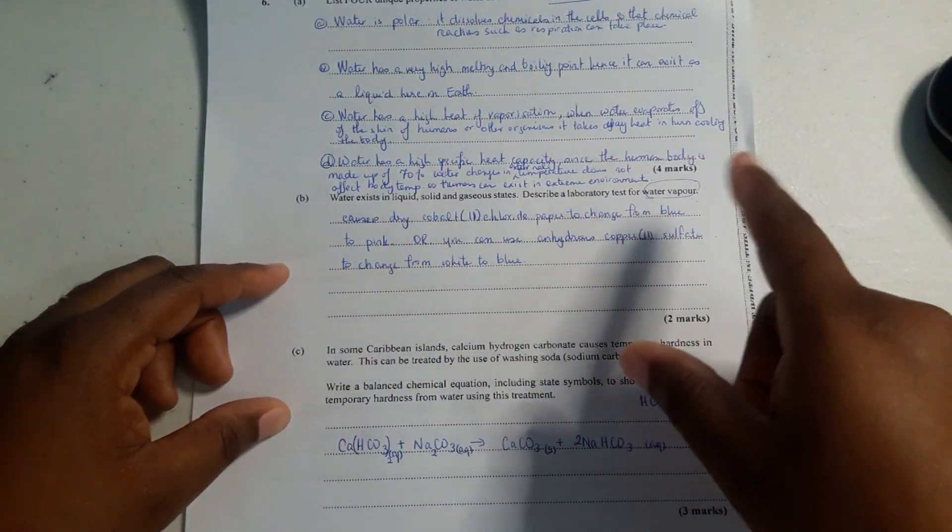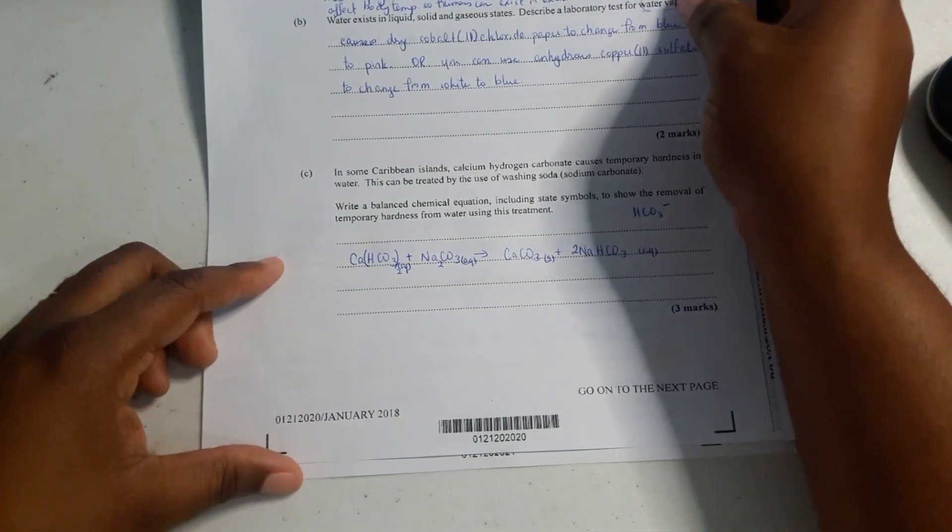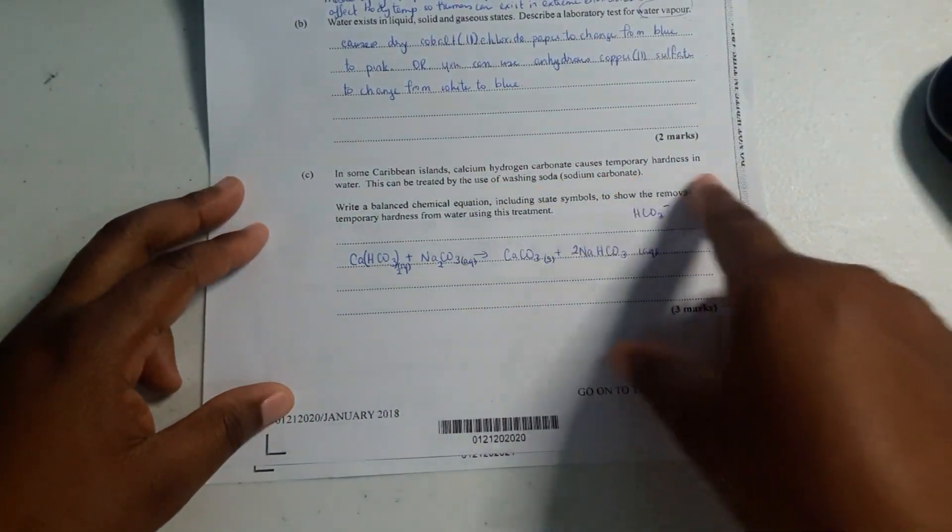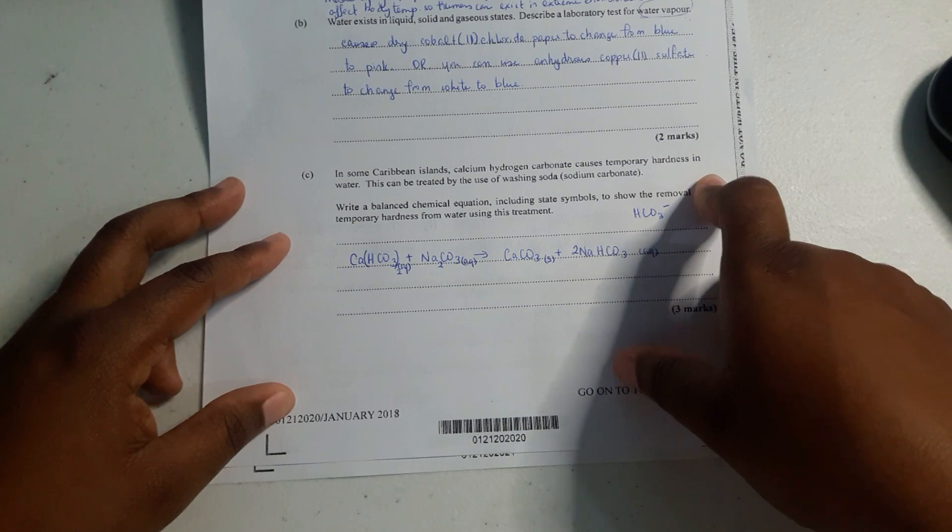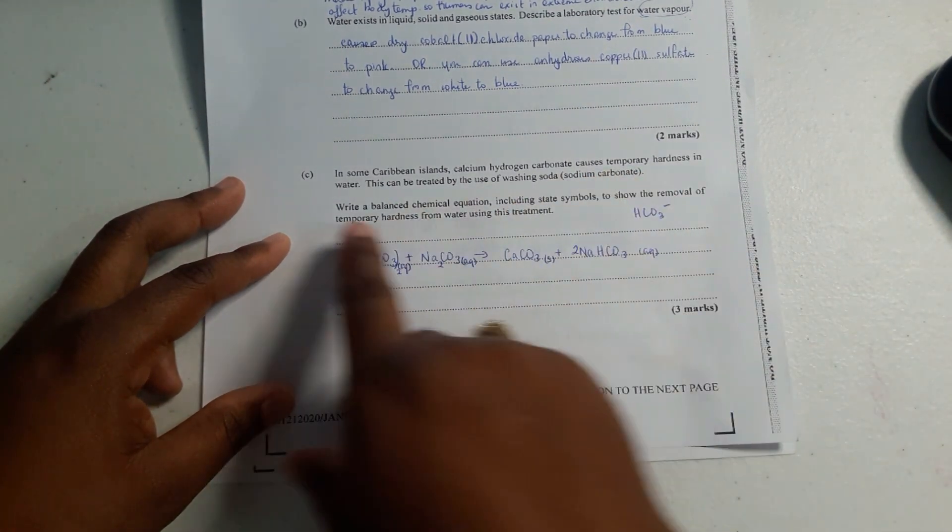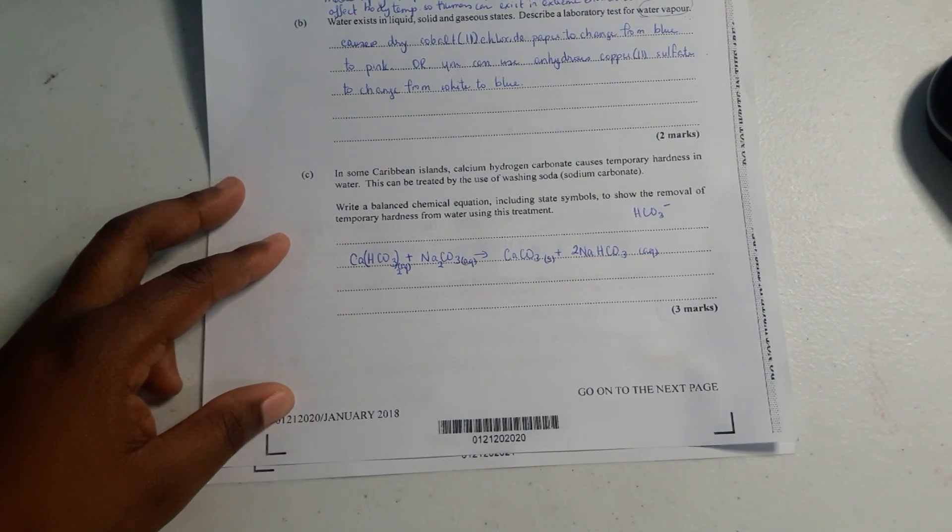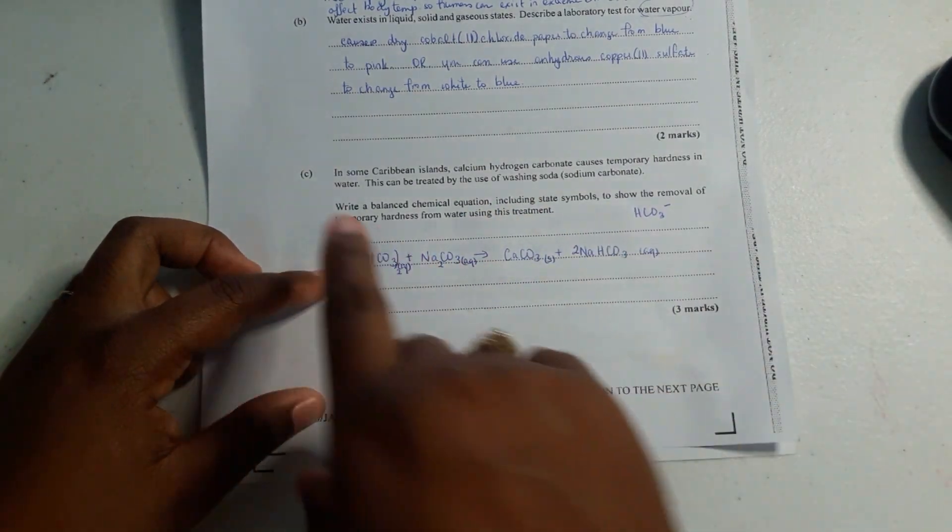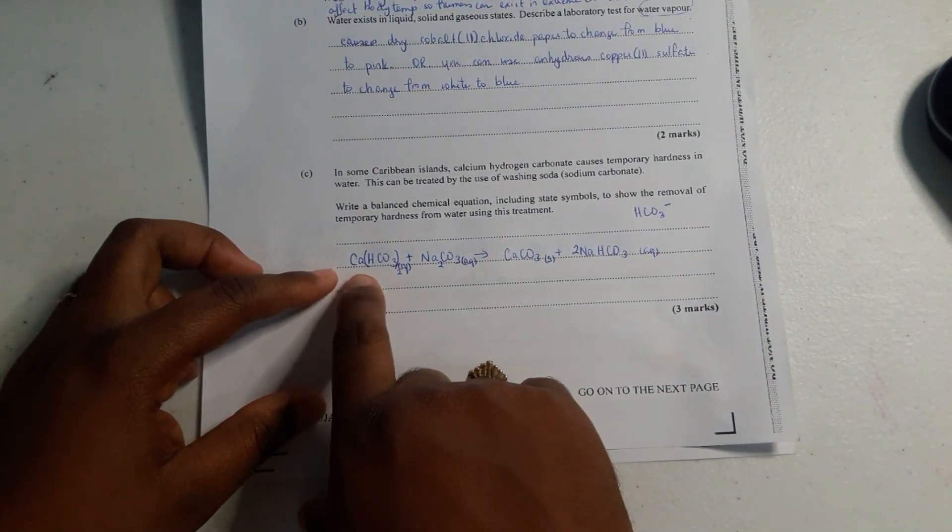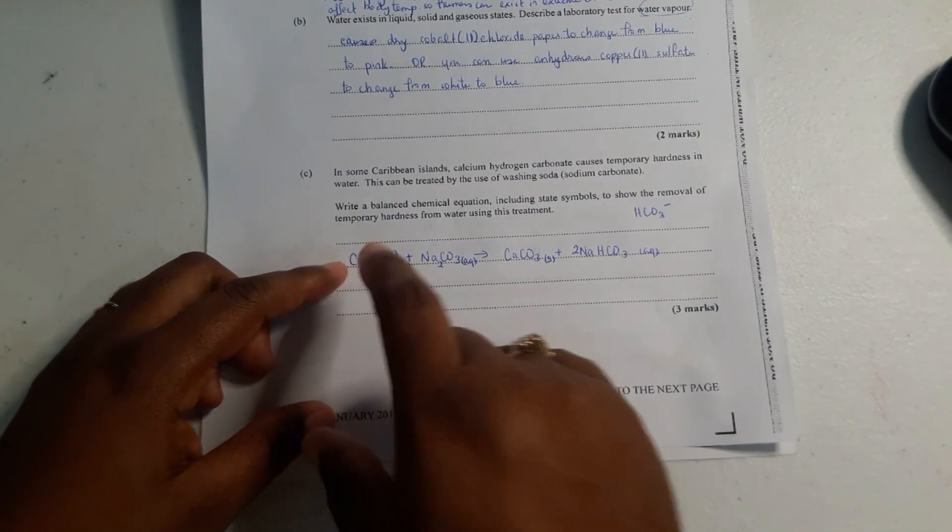Now it says: in some Caribbean islands, calcium hydrogen carbonate causes temporary hardness in water. This can be treated by the use of washing soda, which is known as sodium carbonate. Write a balanced chemical equation including state symbols to show the removal of temporary hardness from water using this treatment.